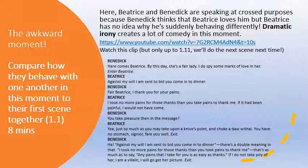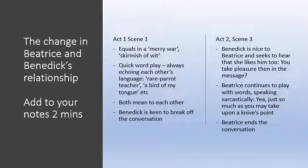Beatrice — there's nothing in those lines that would suggest that she likes Benedict, but he's reading all these things into it because he thinks he knows better. It's a very awkward moment. Add these notes: Act 1 Scene 1 — how they were: equal in a merry war, skirmish of wit. Act 2 Scene 3 — Benedict is nice to Beatrice. This is where we are now in their relationship: he thinks she's in love with him, and she can't understand why he's behaving the way that he is.